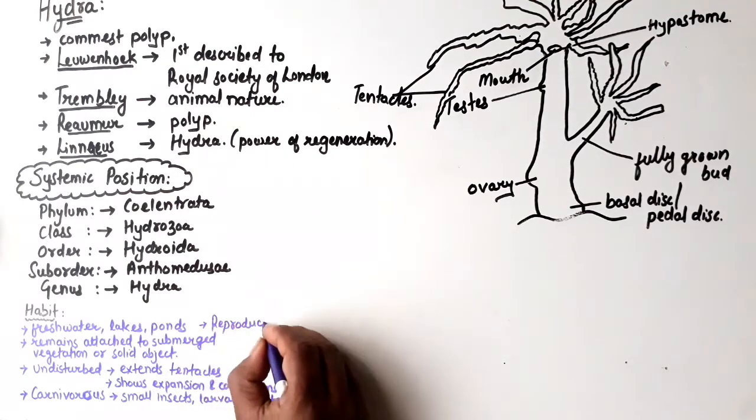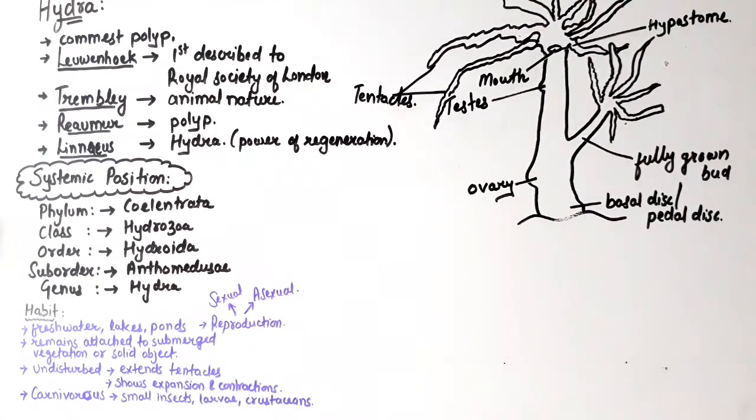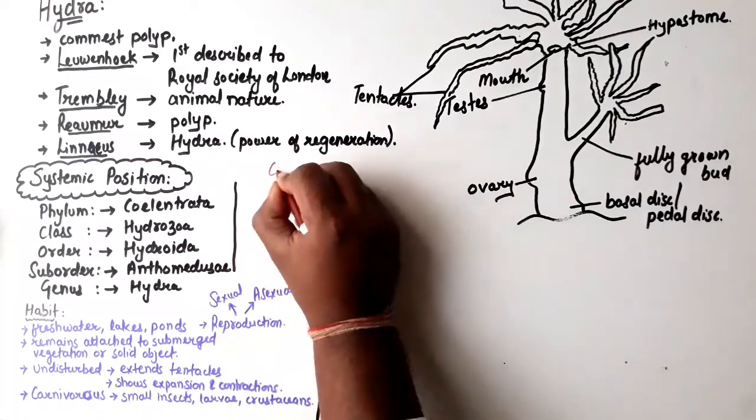Generally, they live solitary lives. Their reproduction can be either sexual or asexual.